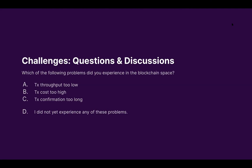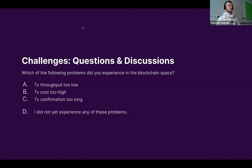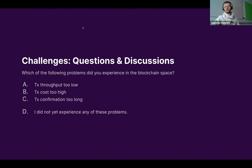We launched the poll — please take part. I'll reveal the results: transaction cost too high is at 75%, confirmation too long is 58%, and throughput too low is 67%. I like that people actually really experience those problems — this is exactly what we are tackling here.